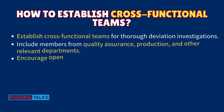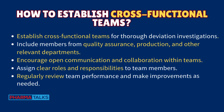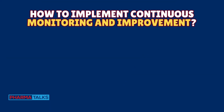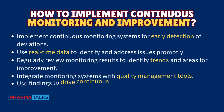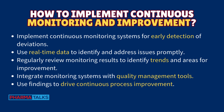Establish cross-functional teams for thorough deviation investigations. Include members from quality assurance, production, and other relevant departments. Encourage open communication and collaboration within teams. Assign clear roles and responsibilities to team members, and regularly review team performance and make improvements as needed.